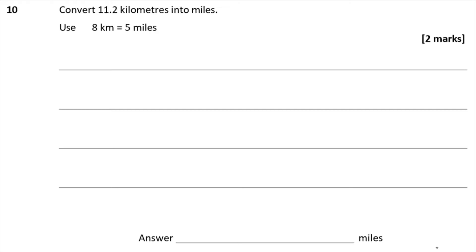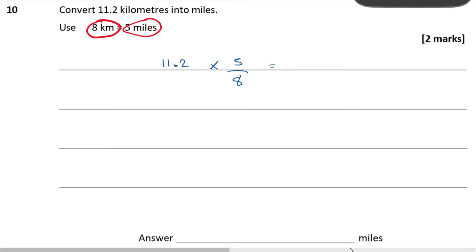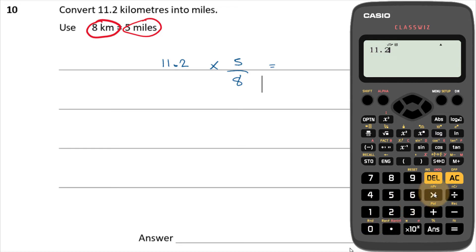Question 10: Convert 11.2 kilometres into miles, using 8 kilometres = 5 miles. Divide by 8 to find how many blocks of 8 km are in 11.2, then multiply by 5. So it's 11.2 × 5/8 = 7 miles.